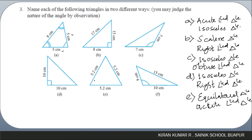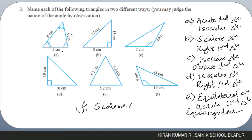Whenever all angles are equal, it is also called equiangular — remember that. For the last figure, all sides are different so it forms a scalene triangle, and one angle is more than 90 degrees so it is also an obtuse-angled triangle.